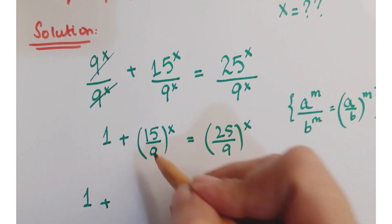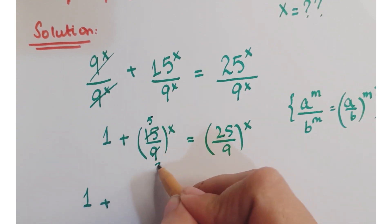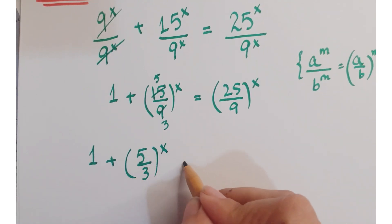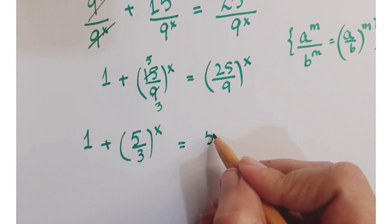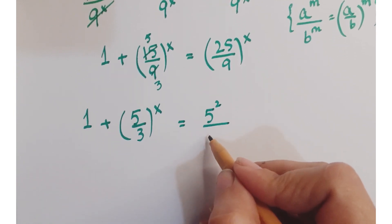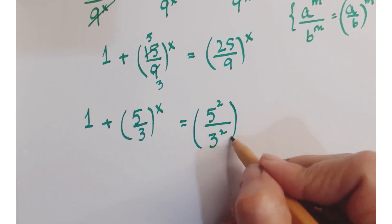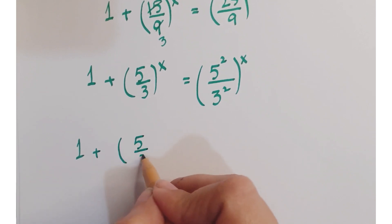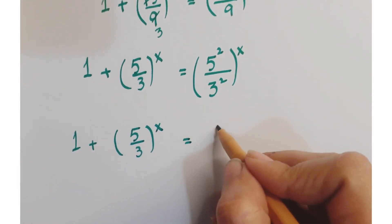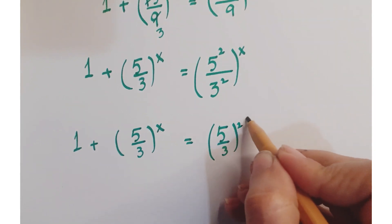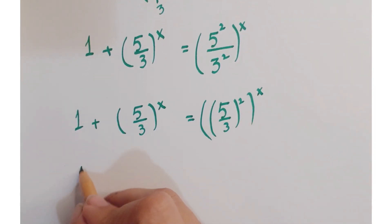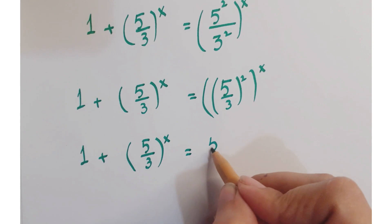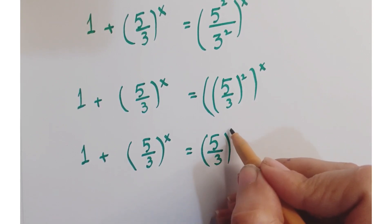Here you have 1. Now, 15 is 5 times 3 and 9 is 3 times 3 — these get cancelled. This gives (5 upon 3) whole to the power x. Here 25 is a square of 5 and 9 is a square of 3, so you can write it as (5 squared upon 3 squared) whole to the power x. Further, you can write this as 1 plus (5 upon 3) whole to the power x equals (5 upon 3) whole squared to the power x.